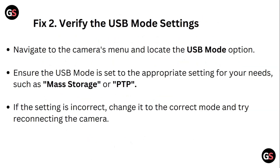Fix two: Verify the USB mode settings. Navigate to the camera's menu and locate the USB mode. Ensure the USB mode is set to the appropriate setting for your needs, such as mass storage or PTP. If the setting is incorrect, change it to the correct mode and try reconnecting the camera.